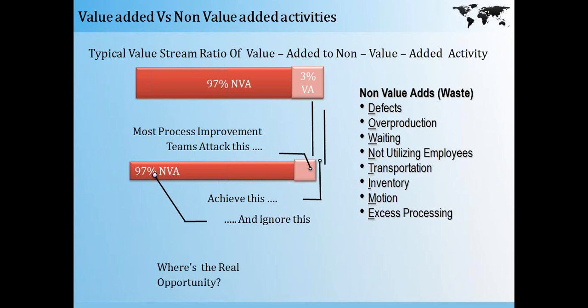Typically, non-value-adds are waste, which include: defects, overproduction, waiting, non-utilization of employees, transportation, inventory, motion, and excess processing. To help us remember all of these, we use the acronym DOWNTIME, where each letter stands for one of these types of waste.